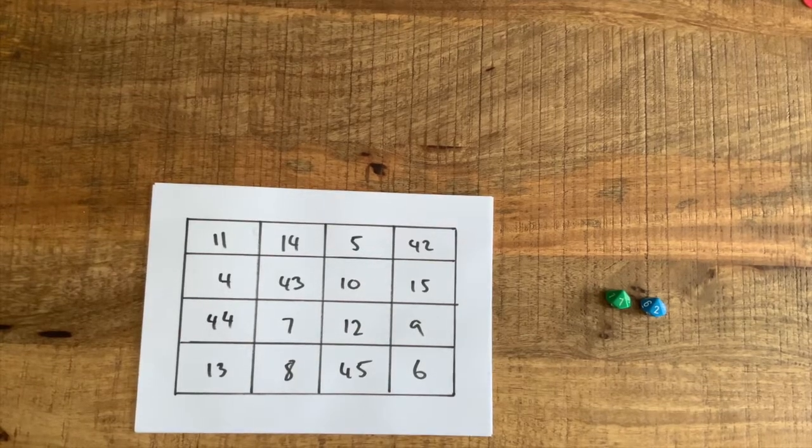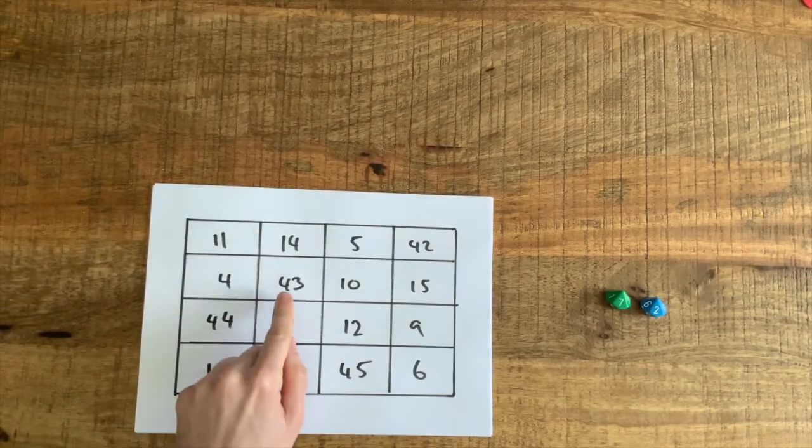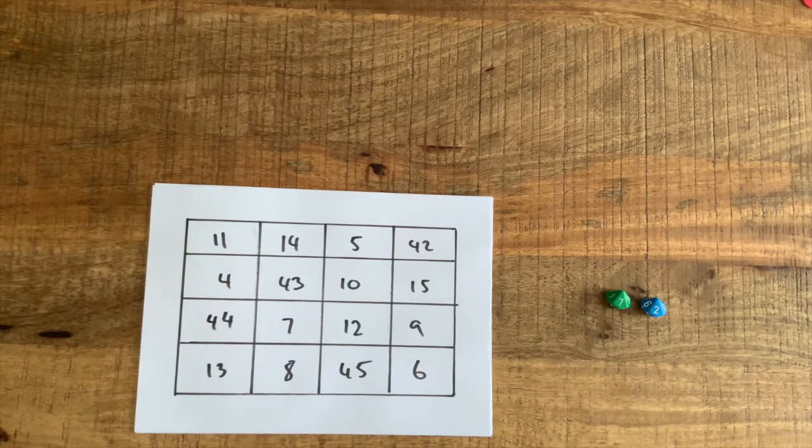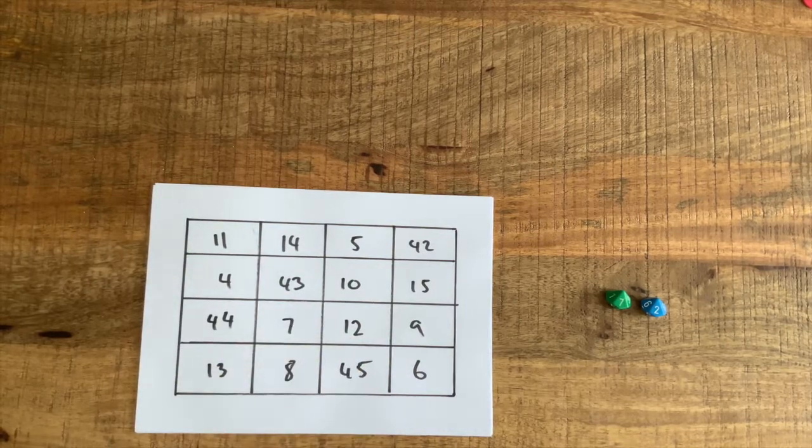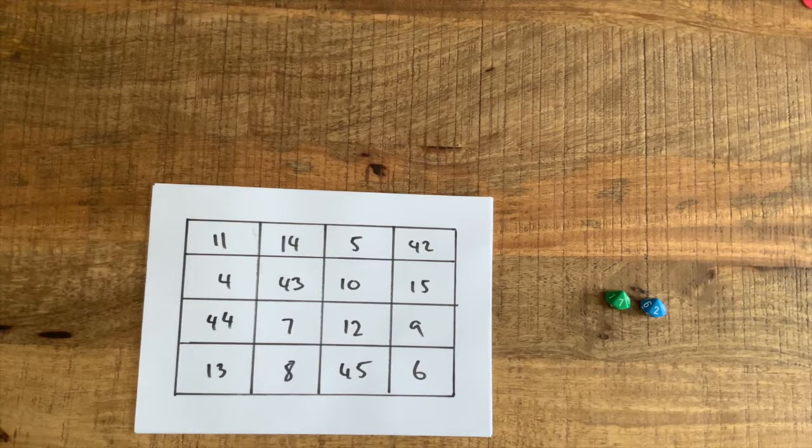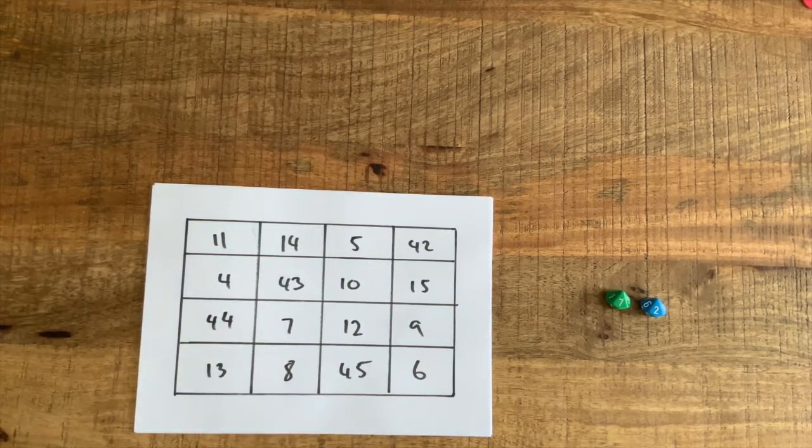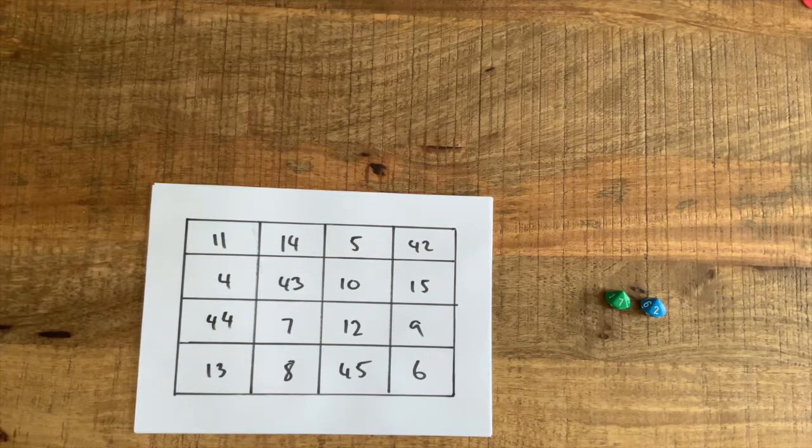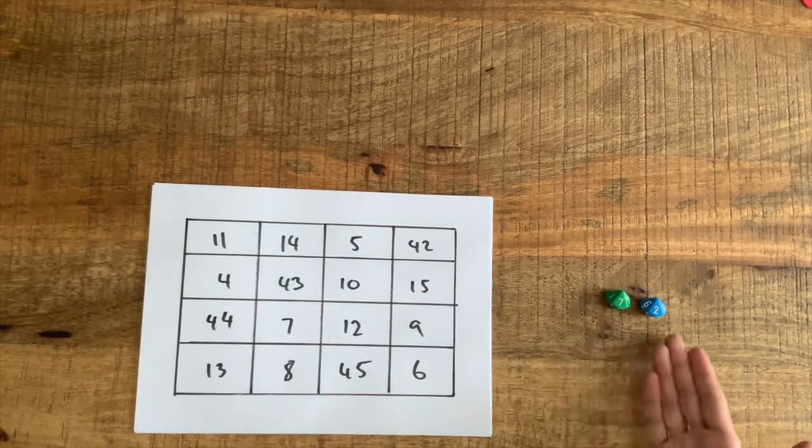And let's just double check one more thing. And that is 11 and 43 is equal to 54 plus 12 is equal to 66 and 6 is 72. Plus 13 and 7 is also 20 plus 10 is 30 and 42 is 72.